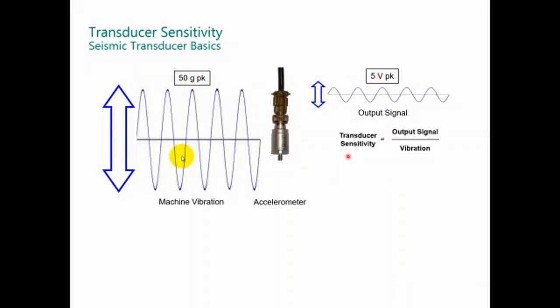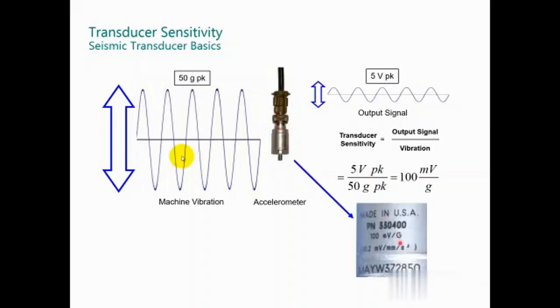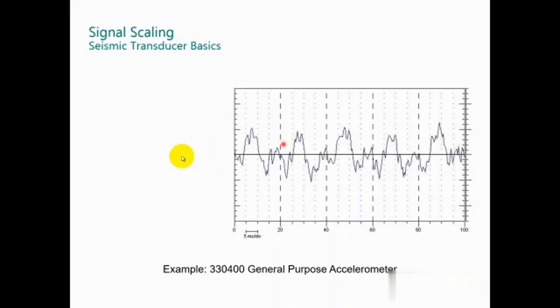Now, the transducer sensitivity is the output signal divided by the vibration. In this case, it's 5 volts peak to peak divided by 50 g's or 100 millivolts per g. This is the scale factor for this seismometer. This is written in the label for the transducer.